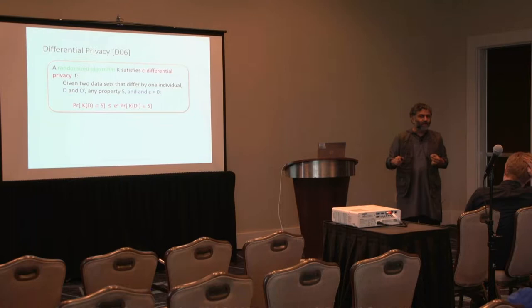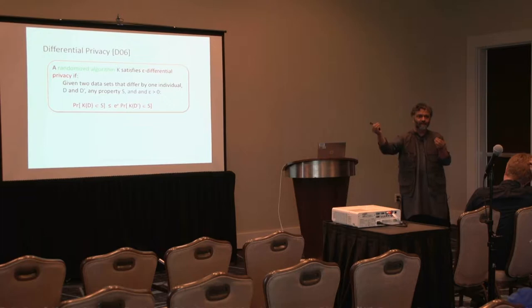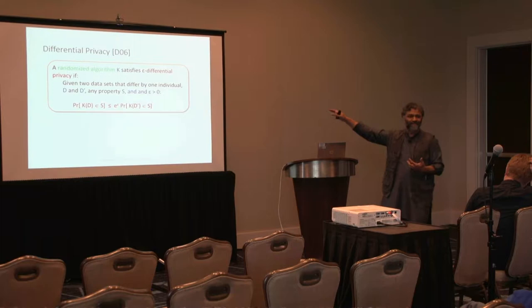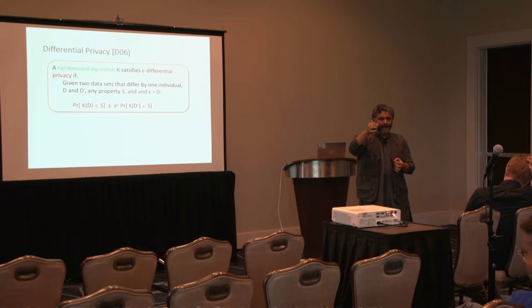The difference between those probabilities is given by a factor of e raised to epsilon, where epsilon is the privacy parameter. Think of epsilon being close to 0: e raised to epsilon is close to 1, so the probabilities are very similar. When epsilon is larger, you are allowed to differ by a much larger amount. This is a semantic definition — nobody tells you how to achieve it. Unlike syntactic approaches like K-anonymity where people gave you a recipe, since 2006 people have come up with a large number of approaches to achieve differential privacy mechanisms.